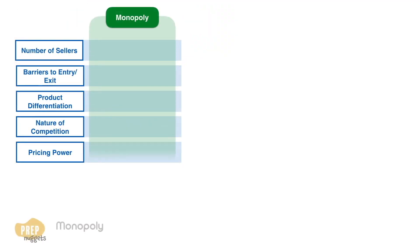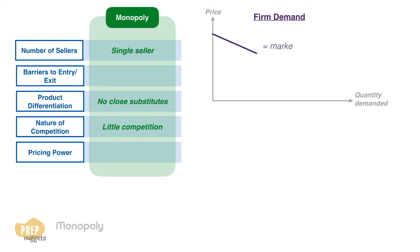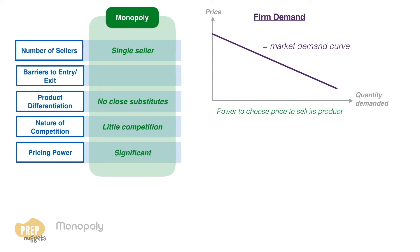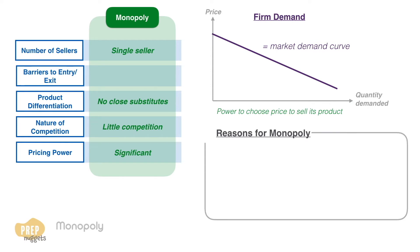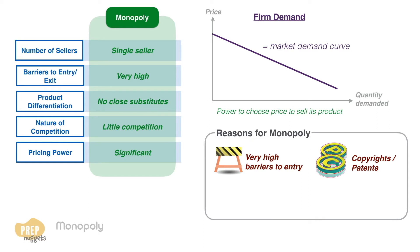A monopoly market is characterized by a single seller of a product with no close substitutes, thereby little competition. This means the firm faces a downward sloping demand curve, which is the market demand curve, and has the power to choose the price at which it sells its product. There can be a few reasons for monopolies. Firstly, very high barriers to entry protect a monopoly producer from competition. Copyrights and patents also protect a monopoly from competition.